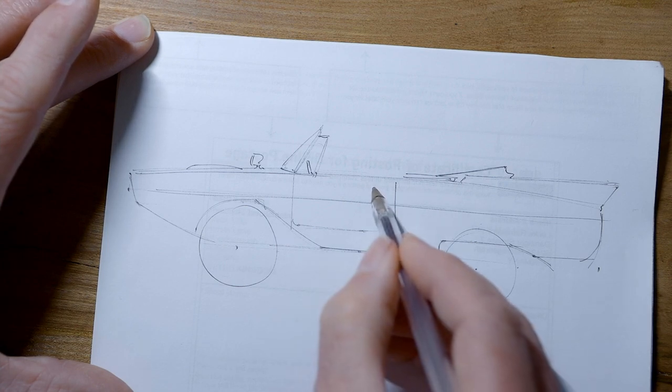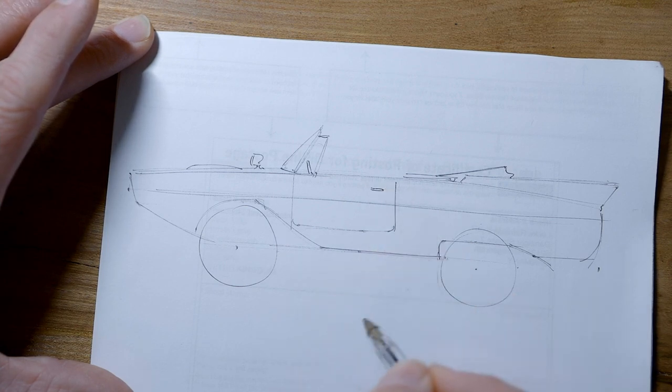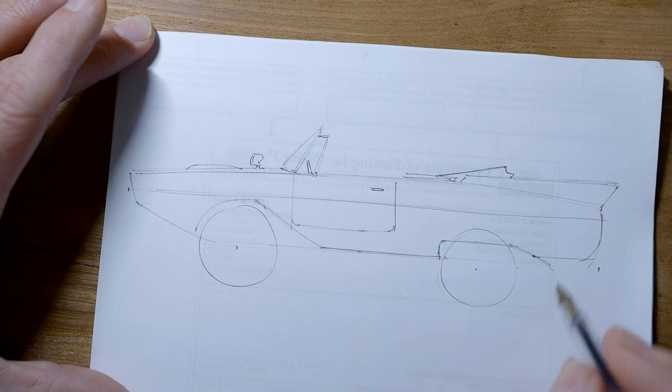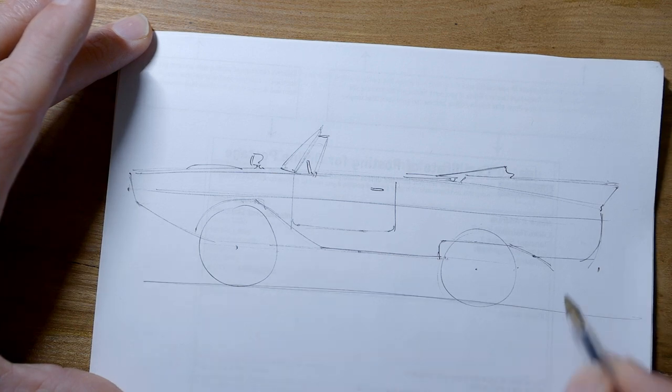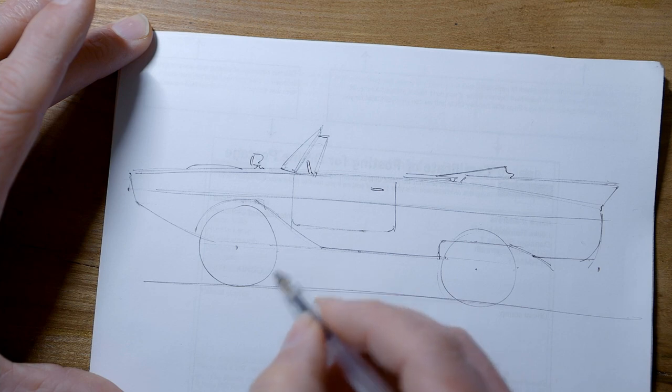And a door handle, just a little teardrop shape there. And we could add the ground in. So hopefully everybody's been drawing quite lightly up to this point. Now we can start to add a few firmer lines and a few accents here and there, just to make the drawing a bit more interesting.